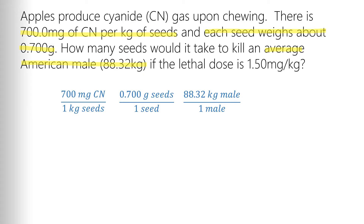Our last one is the lethal dose, and it actually gives it closest to what we normally see in a dimensional analysis problem. We can infer a couple of units: 1.50 milligrams of cyanide over one kilogram of male. That's pulling the information out of the problem. It gives us our units for dimensional analysis and also tells us right now what the number of significant figures are.